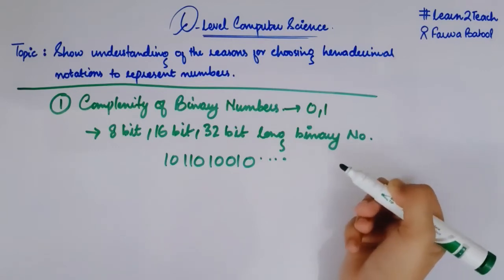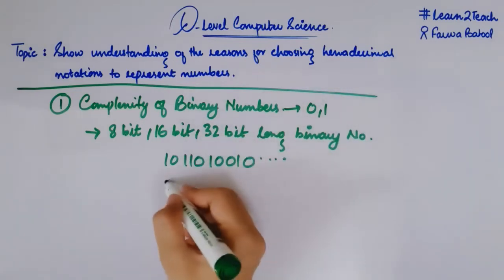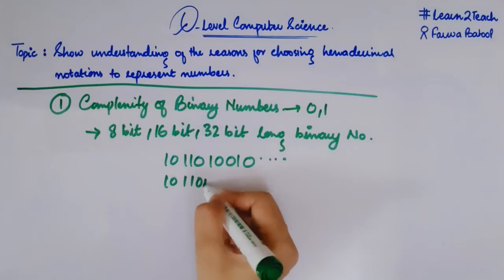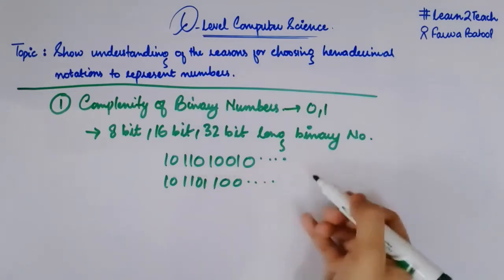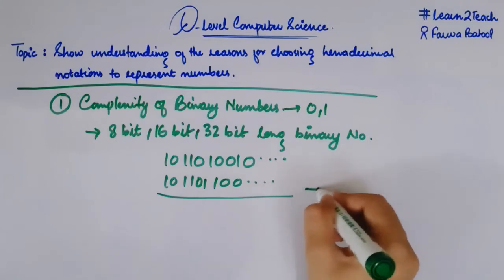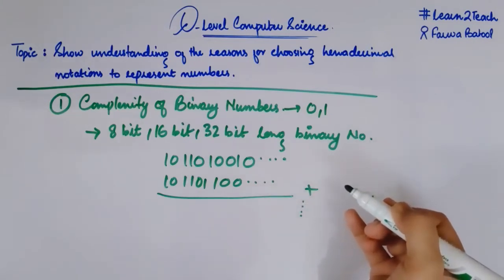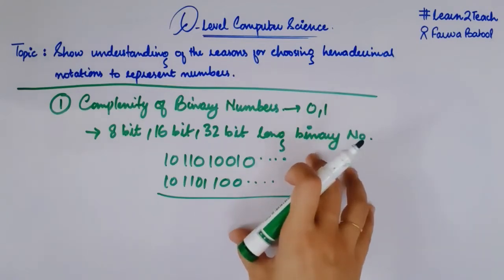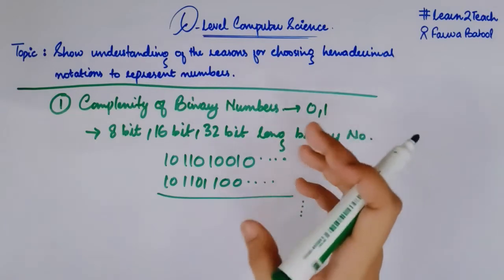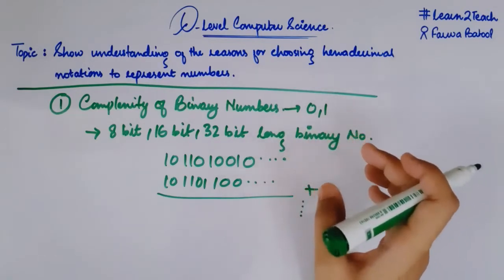Let's suppose I want to add two 32-bit numbers. Then I have to write the two numbers — 1, 1, 0, 0, 0, whatever the numbers are — and then add them together and do more operations in terms of binary data. So it is difficult for us to deal with such numbers because they are in the form of zeros and ones, they are lengthy enough, and they are difficult to read and write.